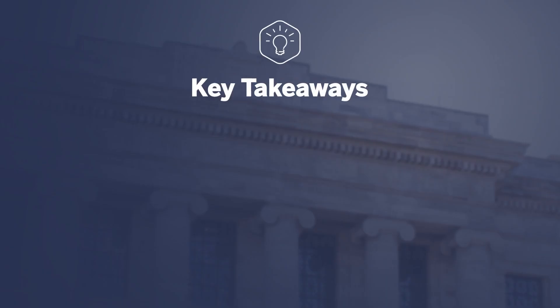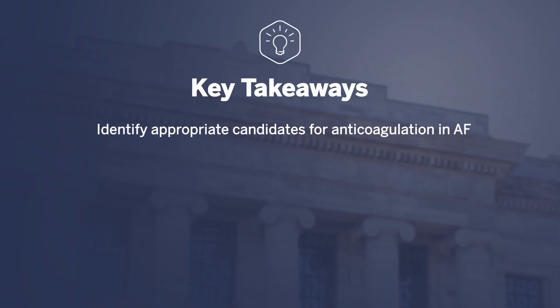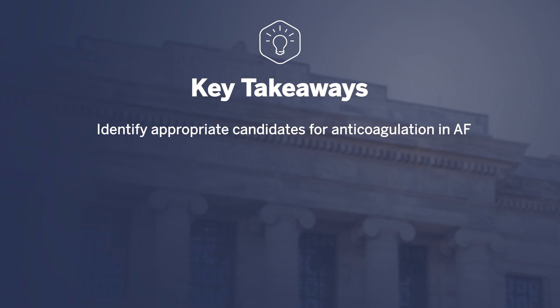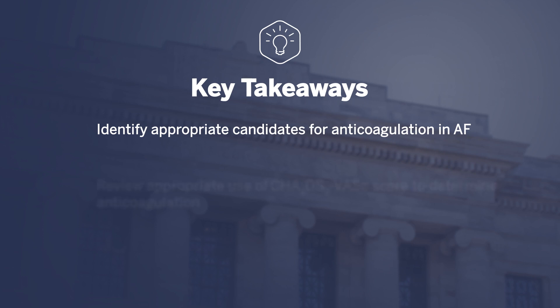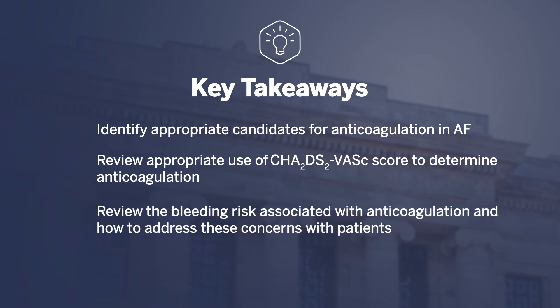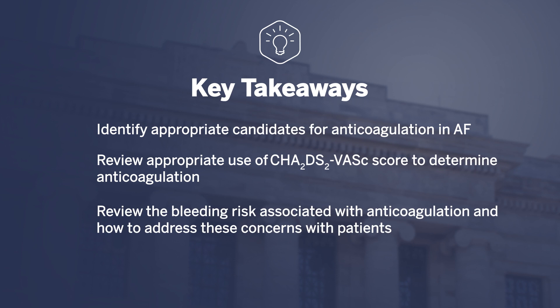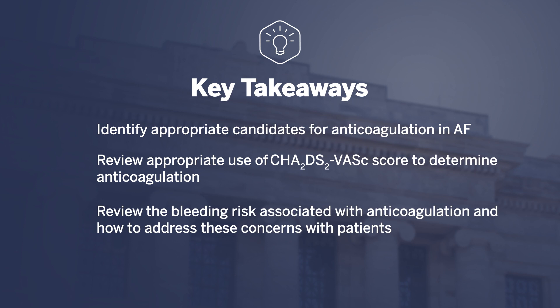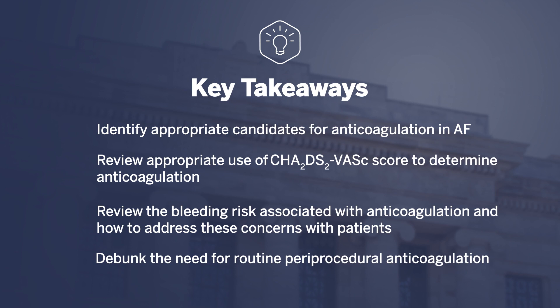The key takeaways from this talk are to identify appropriate candidates for anticoagulation in AFib, to review the appropriate use of the CHADS2-VASc score in determining which patients need anticoagulation. We'll review the bleeding risk associated with anticoagulation and how to address these concerns with patients, and we'll also debunk the need for routine periprocedural anticoagulation in AFib patients.